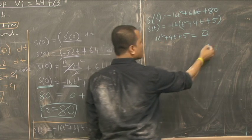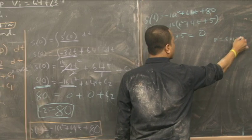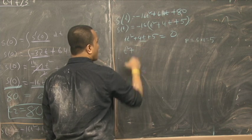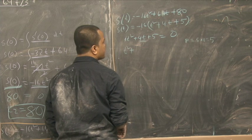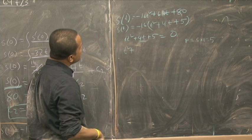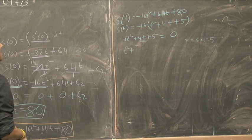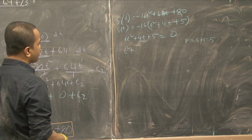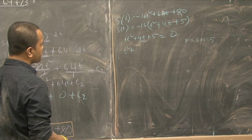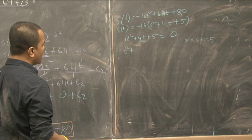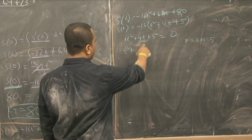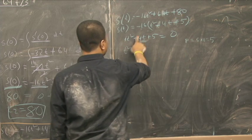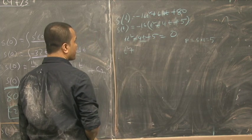Product is 5 times 1 is 5. So, we have to find a number whose product is 5 and sum is 4. Wait, I made a mistake, this one has to be negative. You have to be very careful about this. This is very, very important.